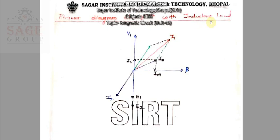Now let's see the phasor diagram of the transformer with inductive load. In the secondary of the transformer, we have connected an inductive load. Normally there are three types of loads: resistive, inductive, and capacitive. We are taking inductive load here. When you connect an inductive load in the secondary winding, the voltage of this load leads the current. This inductive load is not purely inductive — it has some resistance component, so its voltage leads its current by some angle.